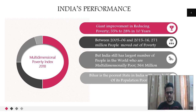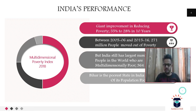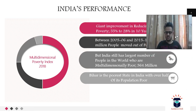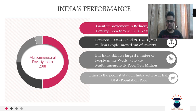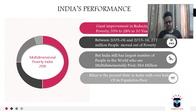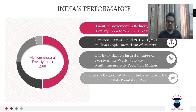Looking at the state-level scenario in India, Bihar is the poorest state, with nearly half of its population living in poverty.